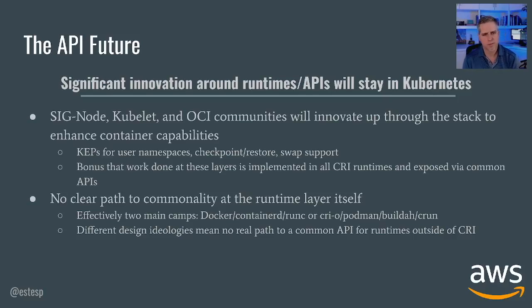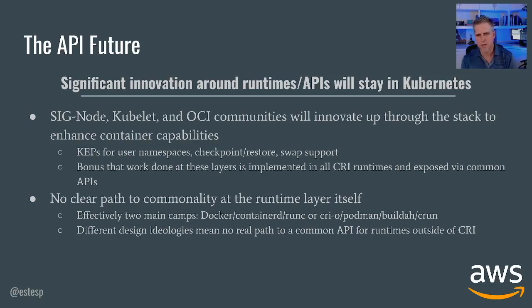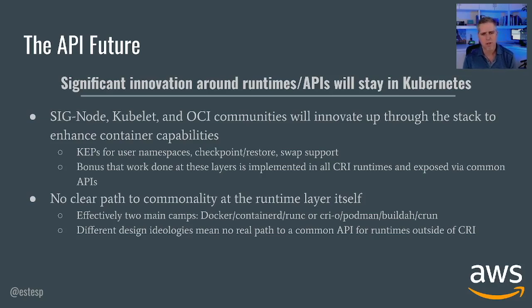Significant innovation around runtimes and the APIs around them will stay in Kubernetes because of the breadth of adoption and the commonality provided there. SIGnode — the special interest group in Kubernetes focused on the node, including the kubelet software and its components — and the OCI communities are providing innovations that cross up through the stack. For example, there are Kubernetes enhancement proposals still in flight for user namespaces, checkpoint restore, and swap support. As these features are added, they drive commonality up through being exposed in the CRI and implemented by the teams managing the runtimes themselves.